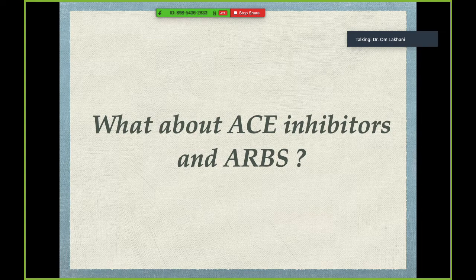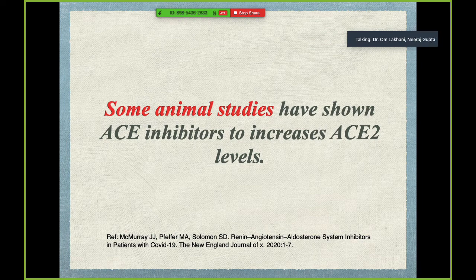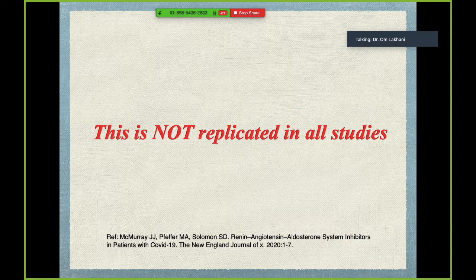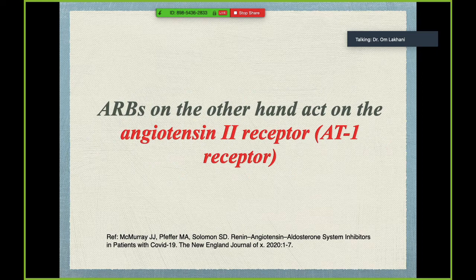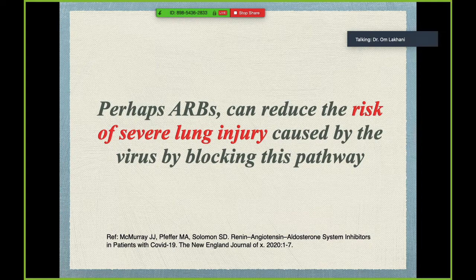What about ACE inhibitors and ARBs — common antihypertensives in clinical practice? Some animal studies showed ACE inhibitors increase ACE2 levels, but this has not been replicated in all studies. The protective effects of ACE inhibitors in cardiovascular protection outweigh the risk of potential viral entry. Hence all current guidelines suggest not stopping ACE inhibitors. ARBs act on the angiotensin 2 receptor and theoretically should be protective, potentially reducing the risk of severe lung injury caused by the virus — ongoing studies are investigating this.